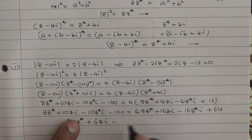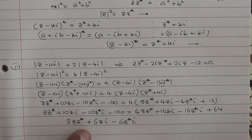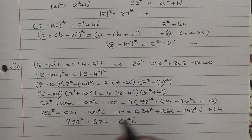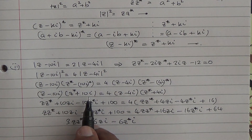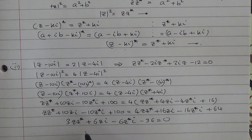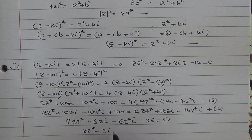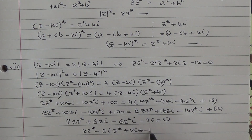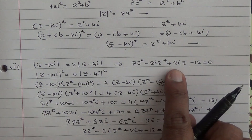Collecting terms: minus 16 minus 6z*i, and 64 minus 100 is minus 36, giving us zero. We can divide through by 3, so that becomes z·z* minus 2i·z* plus 2i·z minus 12, equal to 0. And if you look here carefully, this has been proved.